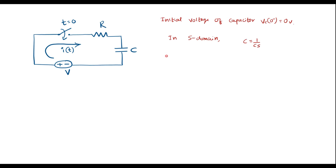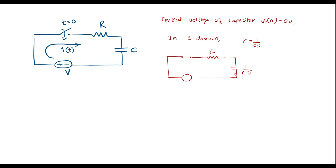Let me redraw the circuit considering the switch is closed. Capacitor should be replaced by 1 over Cs. The voltage, which is constant — DC voltage — should be replaced by V by S. And here I of T is nothing but I of S in S domain.